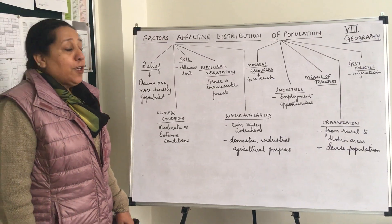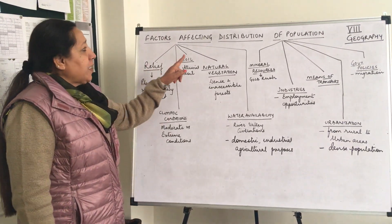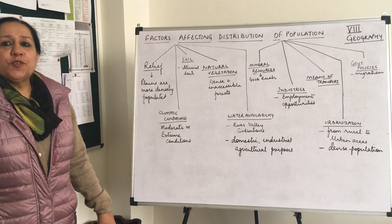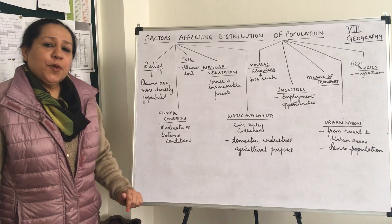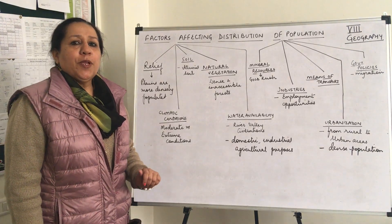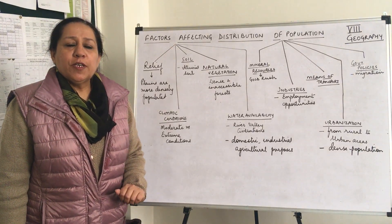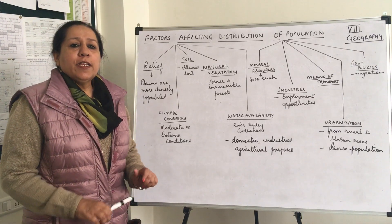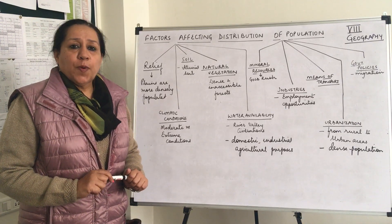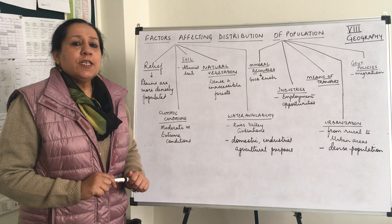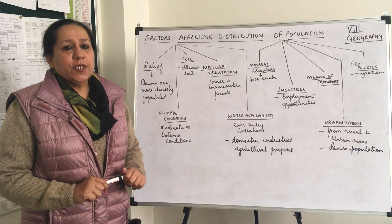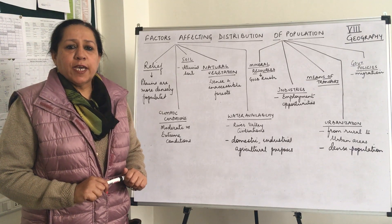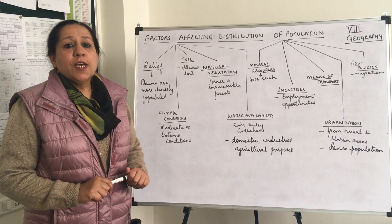Good morning students. Today we will be discussing the factors which affect the distribution of population. As we all know, population is not evenly distributed over the surface of the earth. There are areas with a dense population, there are some areas with a moderate population, and some areas have a very scarce or sparse population.